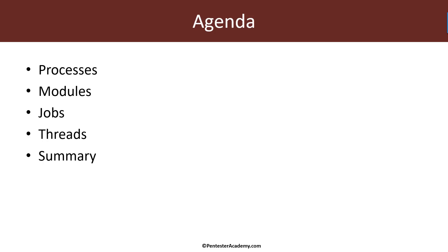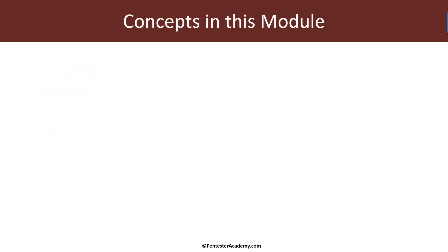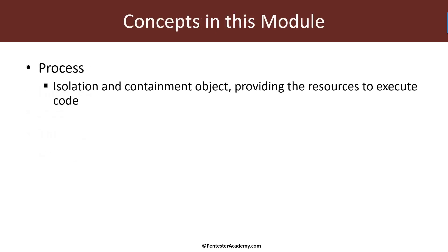I'm assuming that you have some experience with Windows and you know these terms to some extent, because we're going to look at some of the details that are typically used when looking at these kinds of objects. Briefly, a process is an isolation containment object that provides all the resources necessary to execute code.